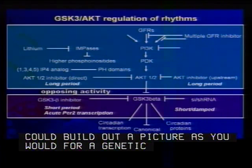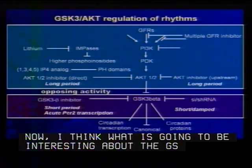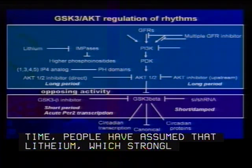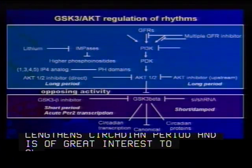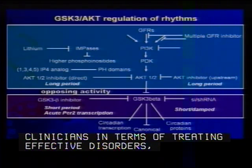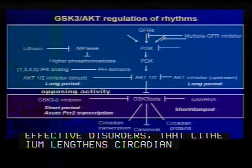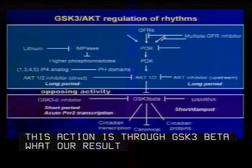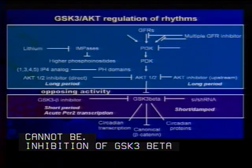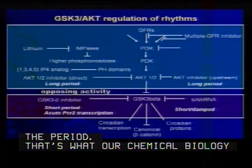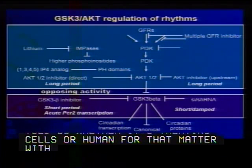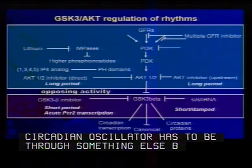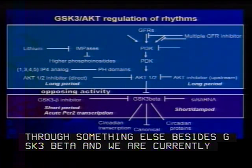What's going to be interesting about the GSK3 beta result is this: for a long time people have assumed that lithium — which strongly lengthens circadian period and is of great interest to clinicians in treating affective disorders — lengthens circadian period because its action is through GSK3 beta. But what our results show is that can't be the case, because inhibition of GSK3 beta shortens period, whereas treating cells or humans with lithium lengthens period. So lithium's effect on the circadian oscillator has to be through something else besides GSK3 beta, and we're currently involved in deconvolving what lithium's target is with respect to clock function.